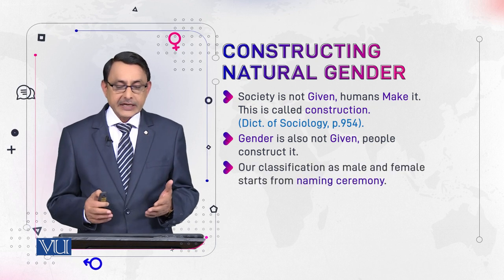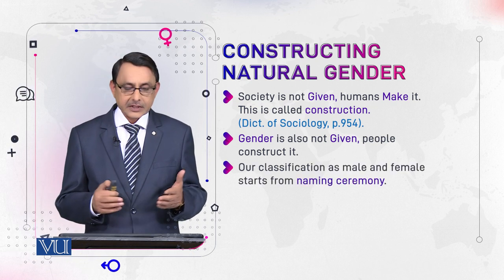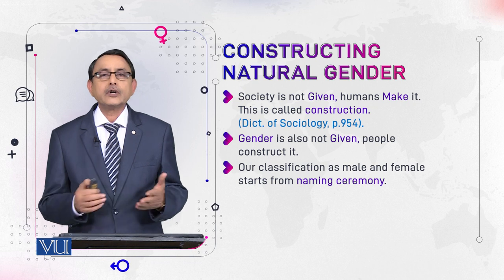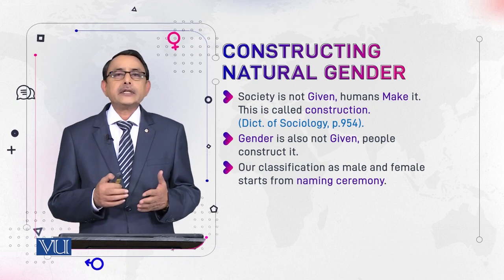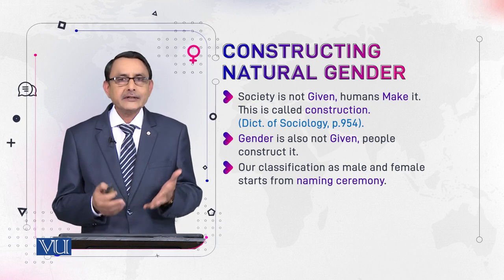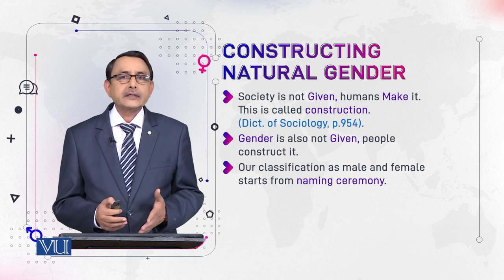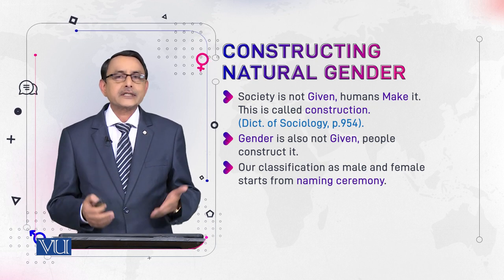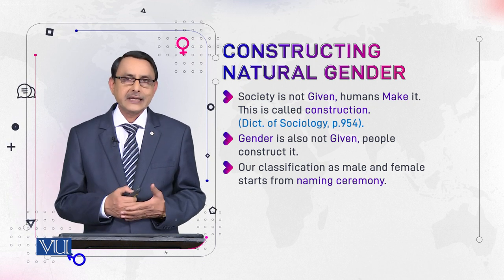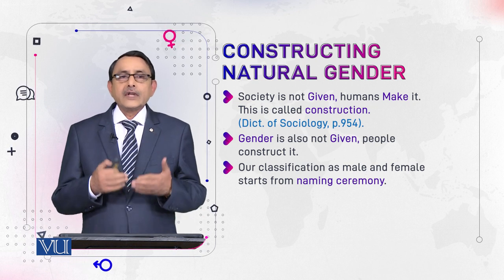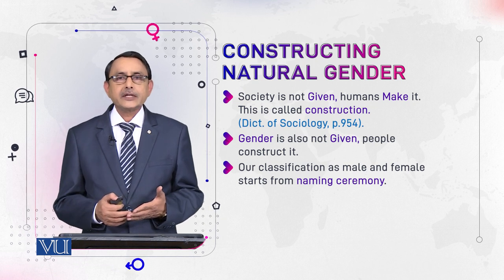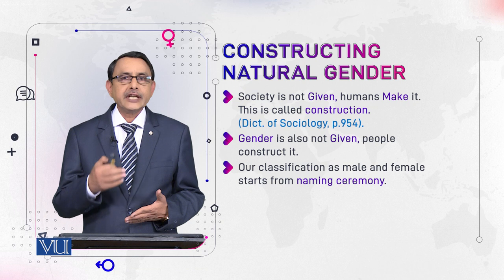Our classification as male and female starts right from our naming ceremony. When a child is named soon after birth, the definition of gender starts from there. Definition itself is, you can say, a synonym of construction. When you say 'I define this thing,' in other words, you construct that concept. So how our natural gender is constructed begins from our naming ceremony.